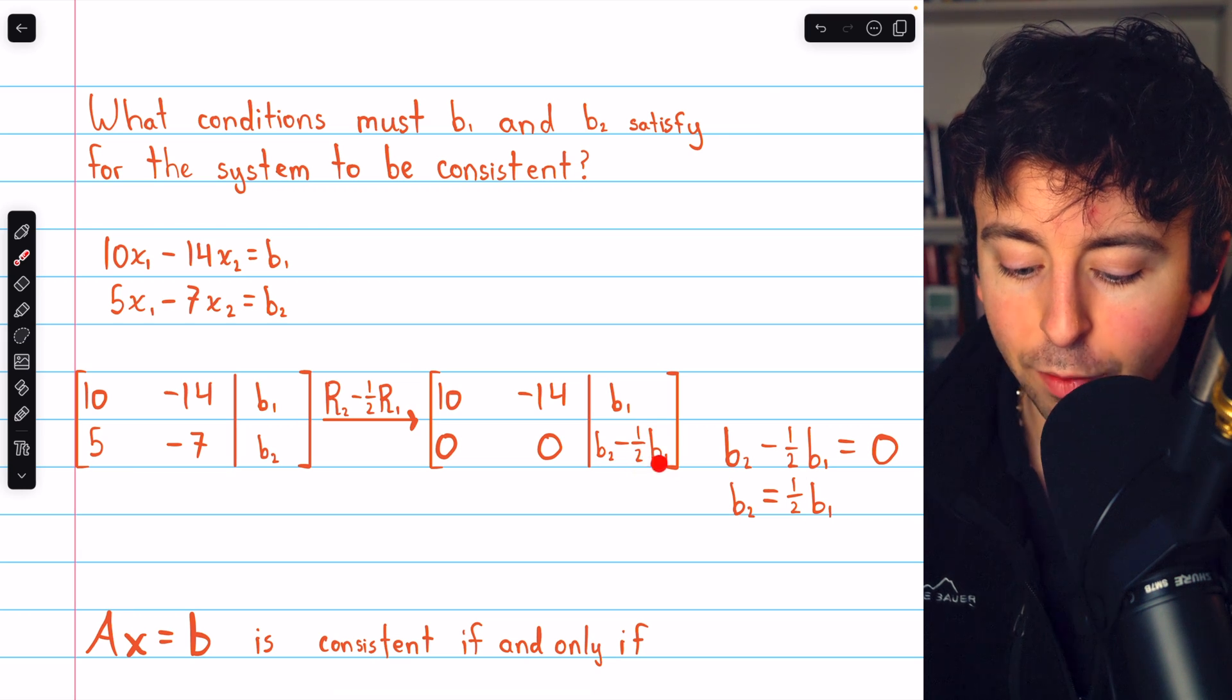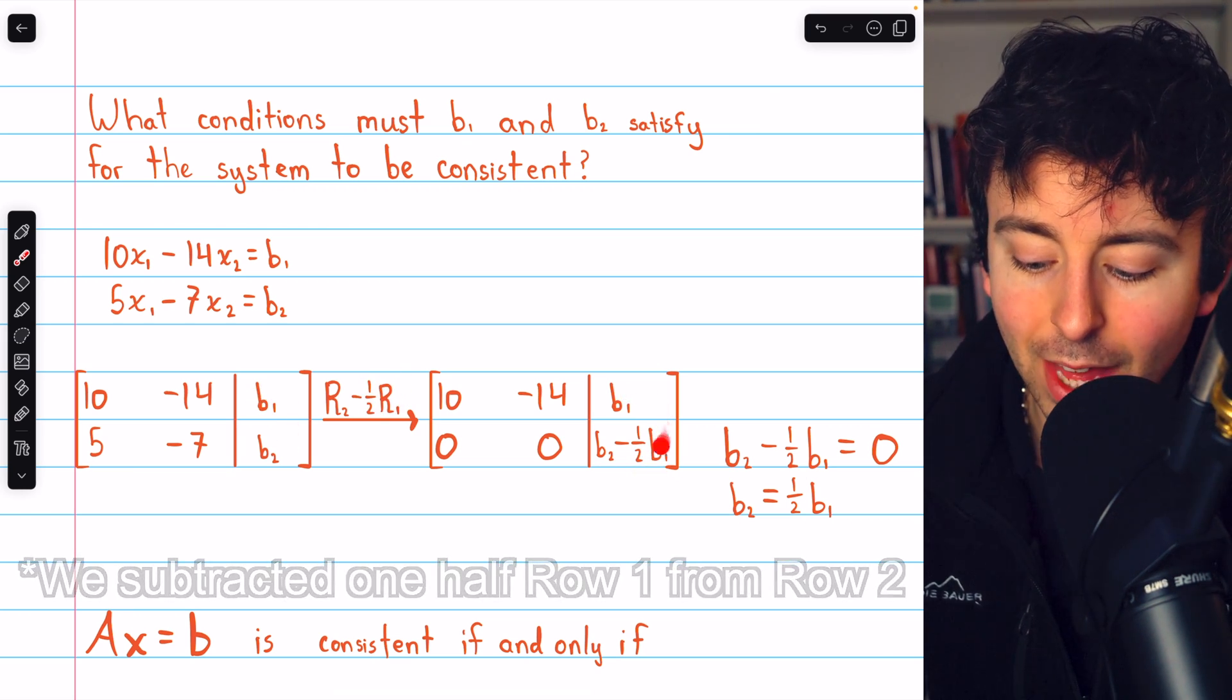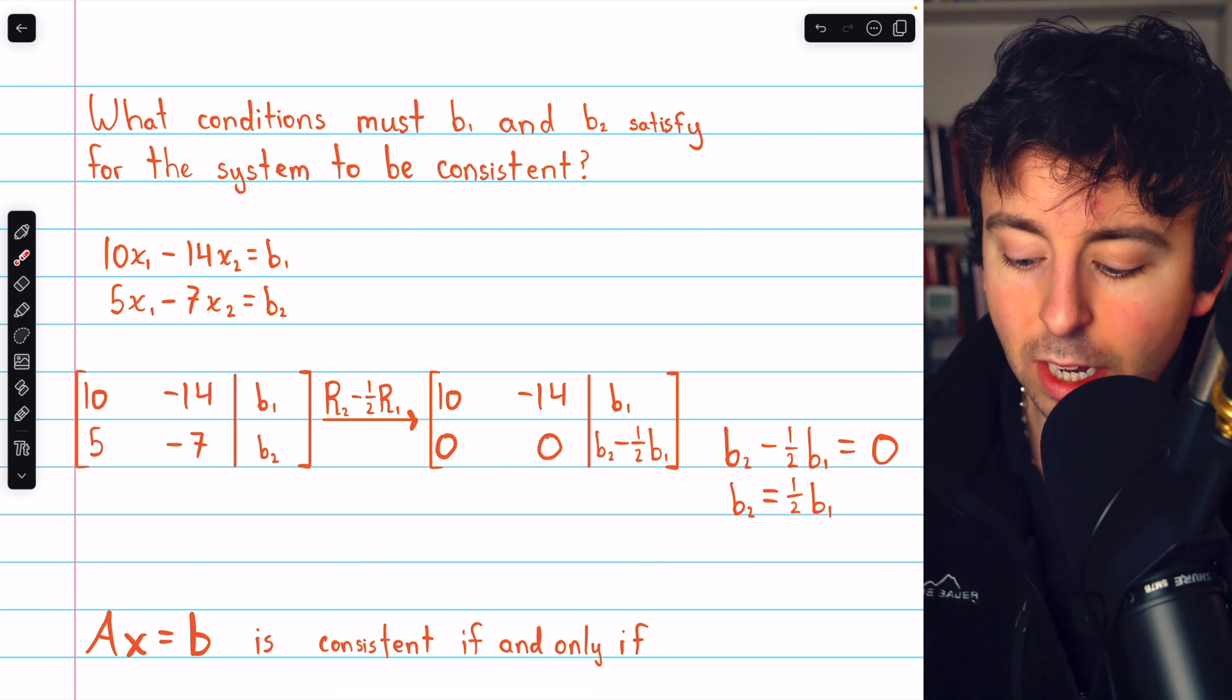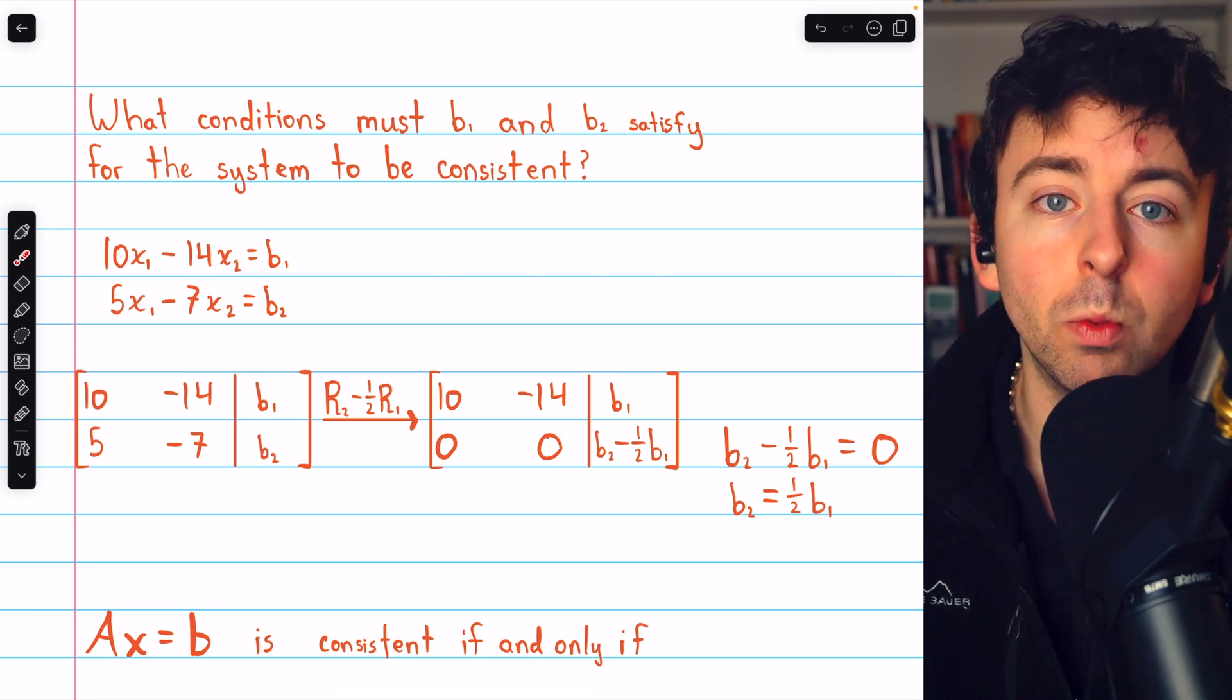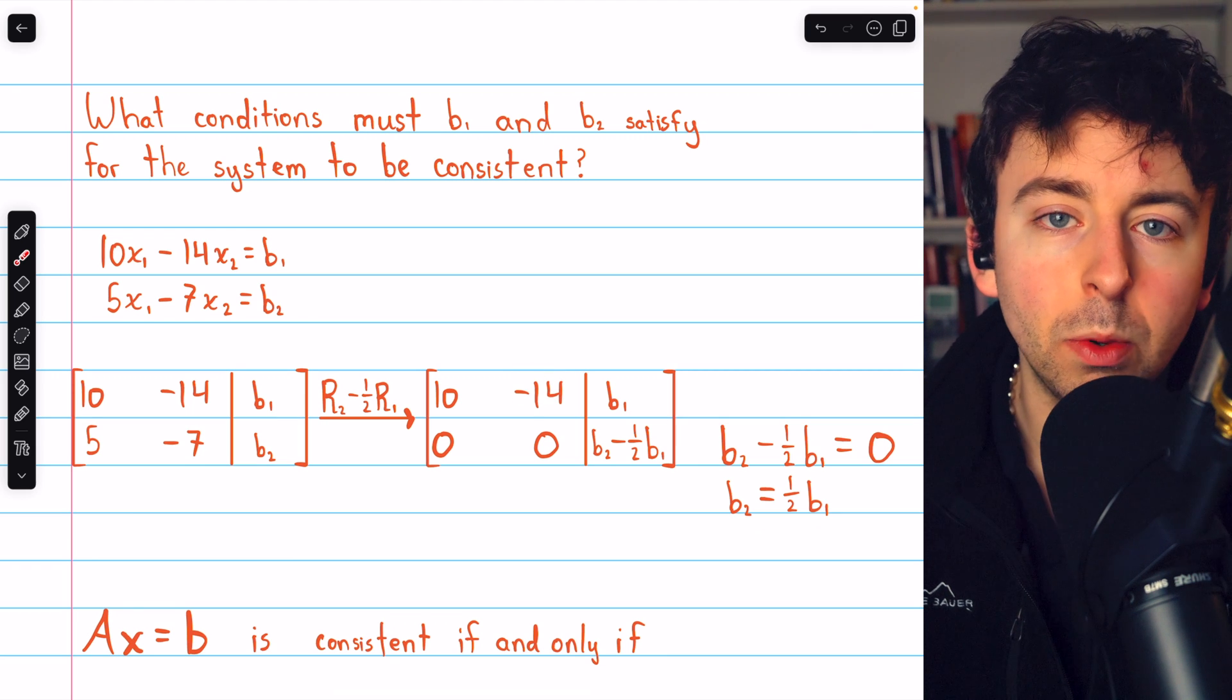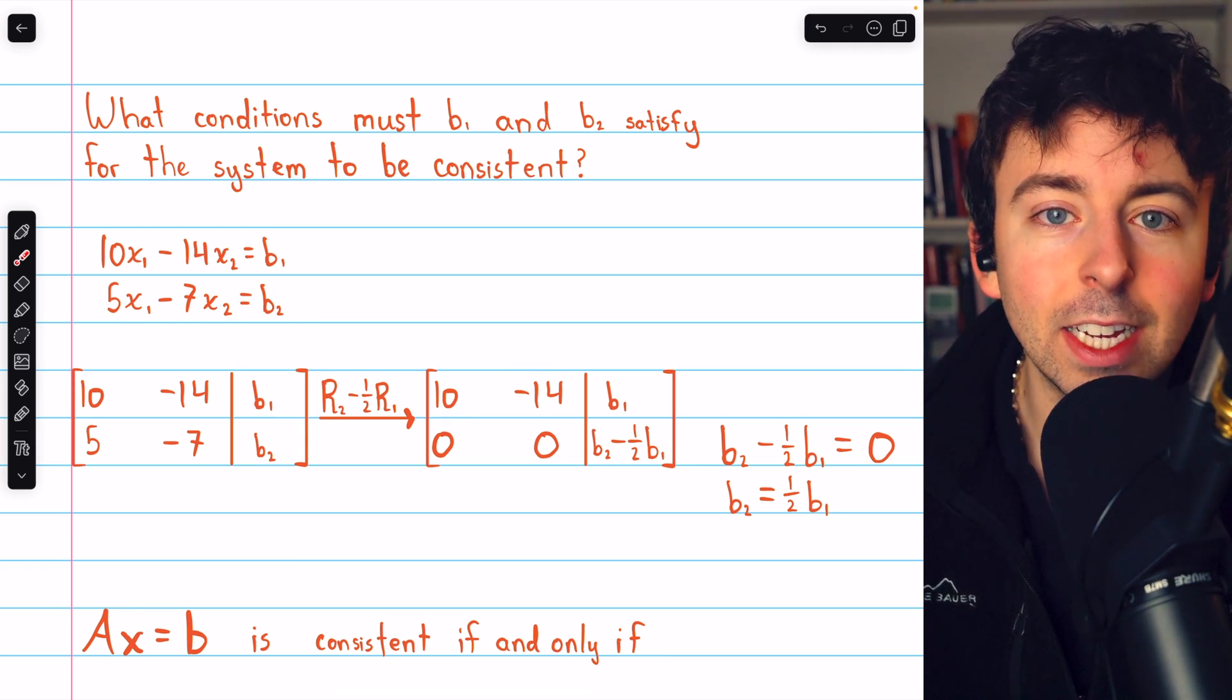b2 minus 1 half b1, right? We subtracted 1 half from row 1, which is why we have that there. b2 minus 1 half b1 must equal 0. And so b2 must be half of b1. As long as that's satisfied, x2 can be whatever it wants. It's a free variable. And x1 will be determined accordingly.